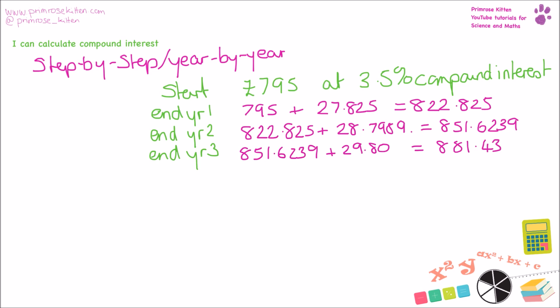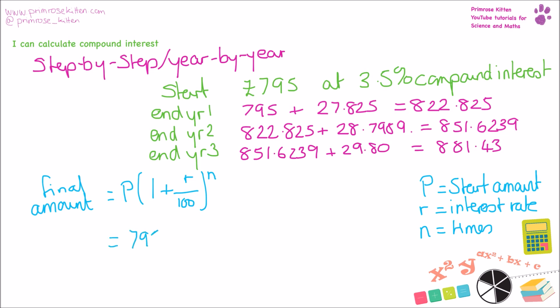Now the equation that you can remember for this is the final amount is equal to p, where p is the amount that you start with, r is the interest rate, and n is the number of times you've accrued interest, which generally is going to be year by year. So popping that in here, we can see that our start amount was 795. 1 plus 3.5 over 100 to the power of 3 gives us really, really nicely the same answer.